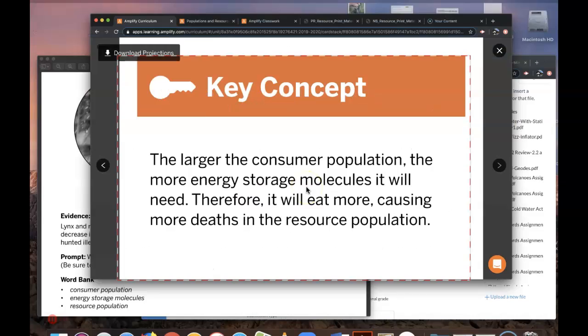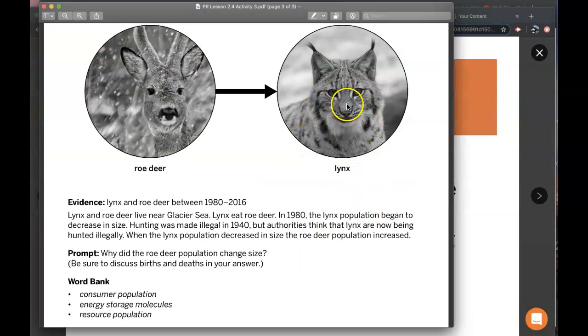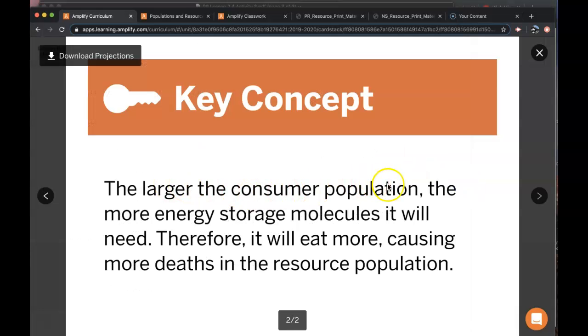The main point of all this is that the larger the consumer population—and the lynx are the consumer population eating the roe deer in this scenario—the larger the consumer population, the more energy storage molecules they will need. Therefore, it will eat more,